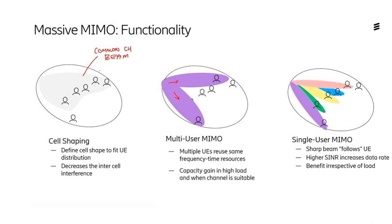In 5G, common channels can be defined — or I should say the coverage of these common channels can be defined through datafill with certain options that provide, for example, macro coverage, which is a wide azimuth beam.